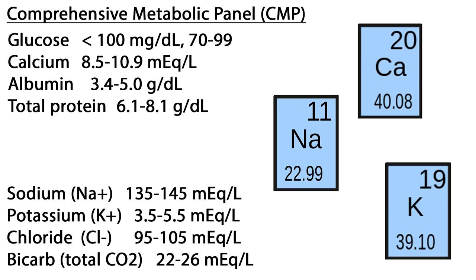The Comprehensive Metabolic Panel, or CMP, is a panel of 14 blood tests that provide a screening of kidney and liver function, diabetic and parathyroid status, and electrolyte and fluid balance. The CMP is an expanded version of the Basic Metabolic Panel, or BMP, which does not include liver tests. Individual tests on the CMP include glucose, which should be below 100 mg per deciliter, ranging between 70 to 99.